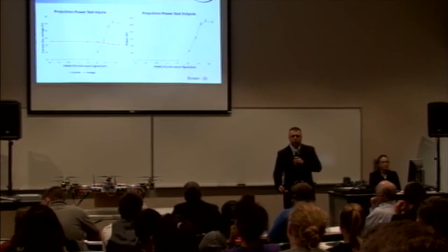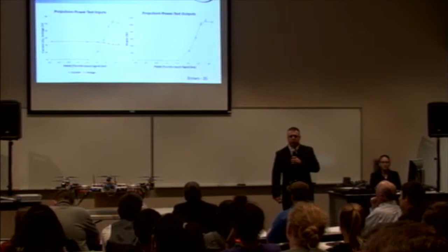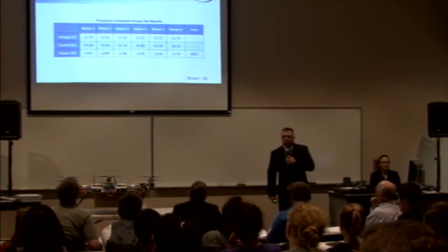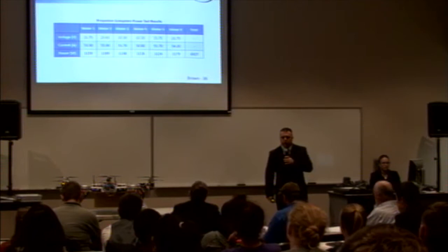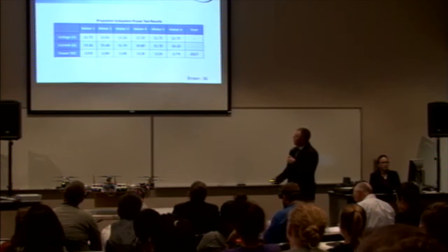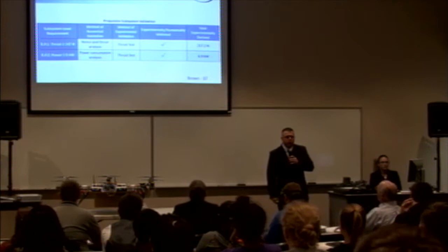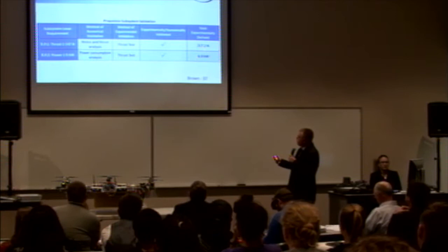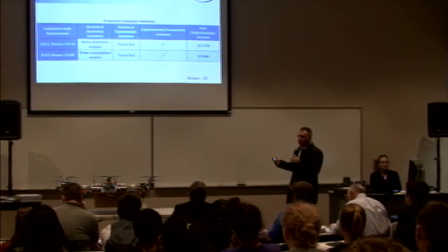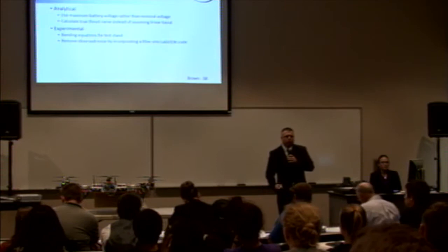As we were running this thrust test, our electronic speed controllers were logging data, specifically current and voltage, as shown here as a function of our throttle input. The product of the current and voltage is our power, shown here. This table represents all the maximum current and voltage experienced, as well as the calculated power. Summing these powers together, we receive a total power consumed of approximately 7 kilowatts. In summary, the thrust and power requirements are both validated, as our total thrust provided by the system is 217.2 newtons and our power requirement is 7 kilowatts.